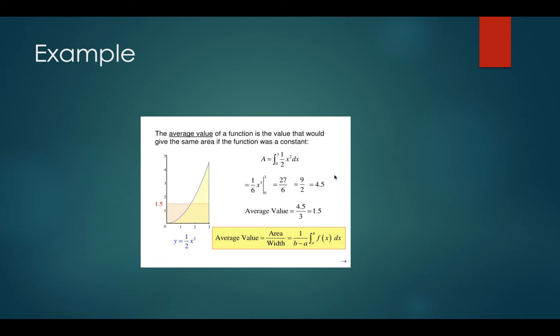So using the reverse power rule, we are going to increase our exponent by 1 and multiply by 1 over n plus 1. So we're going to use 3. So 1 half times 1 third is 1 sixth, and then we have x to the third, and we'll go from 0 to 3.